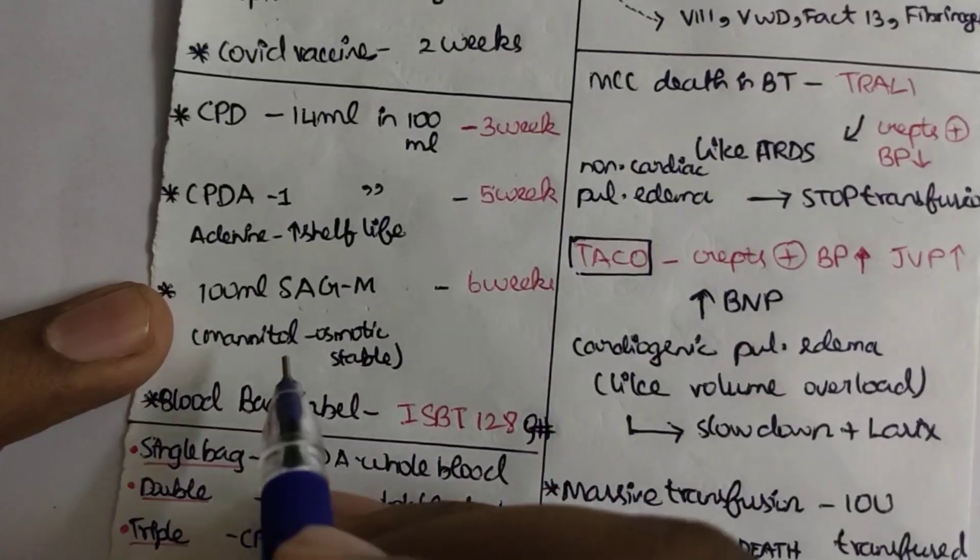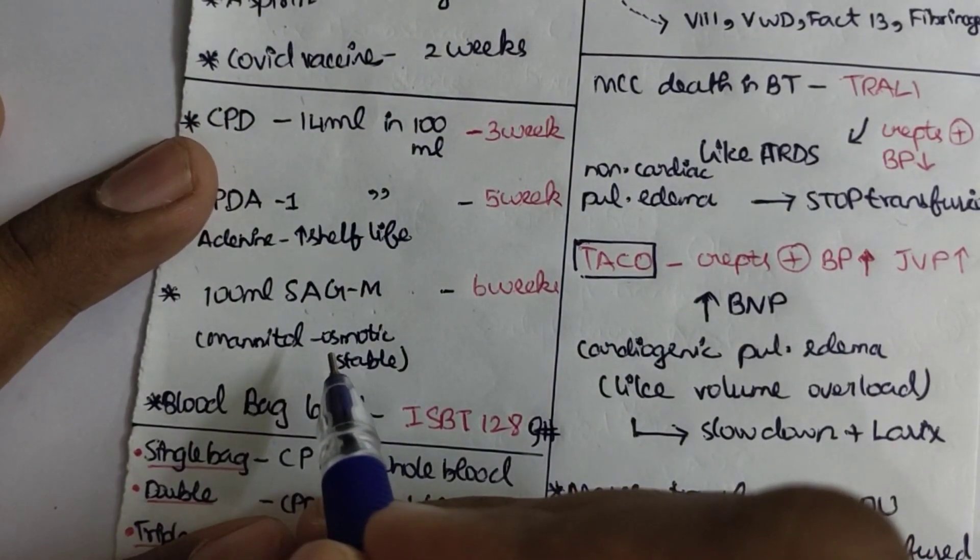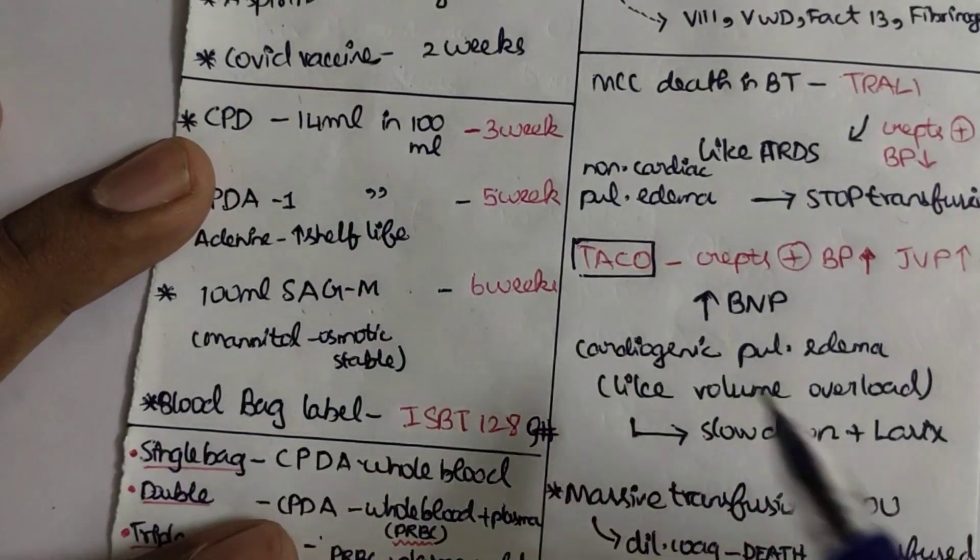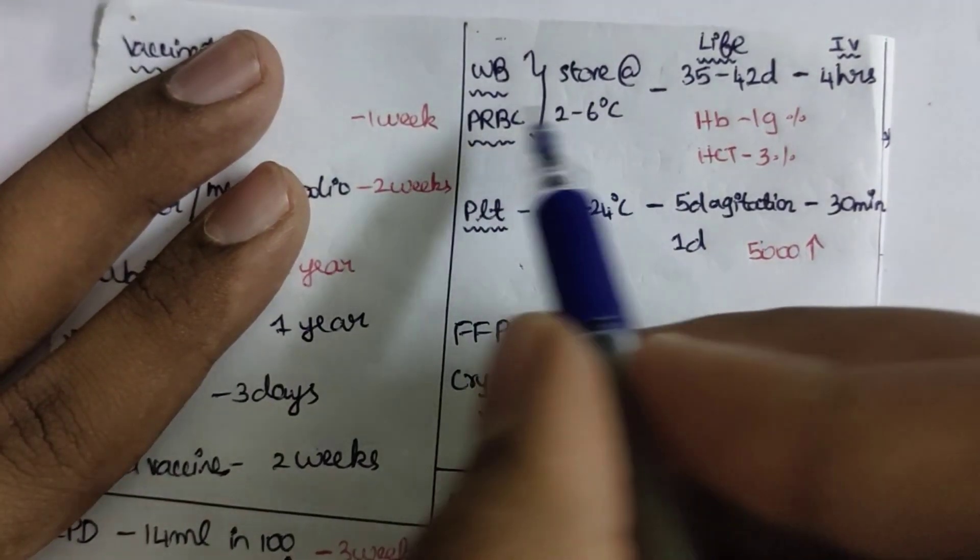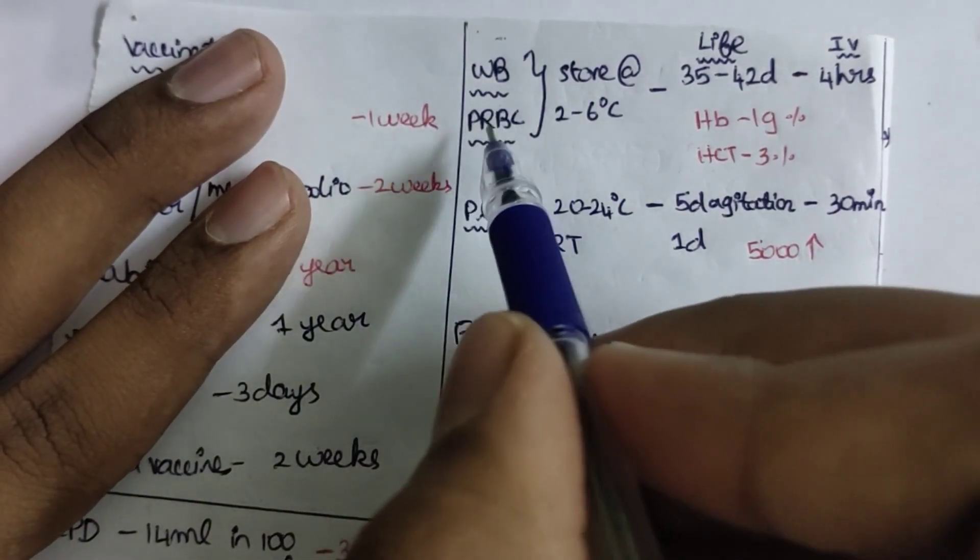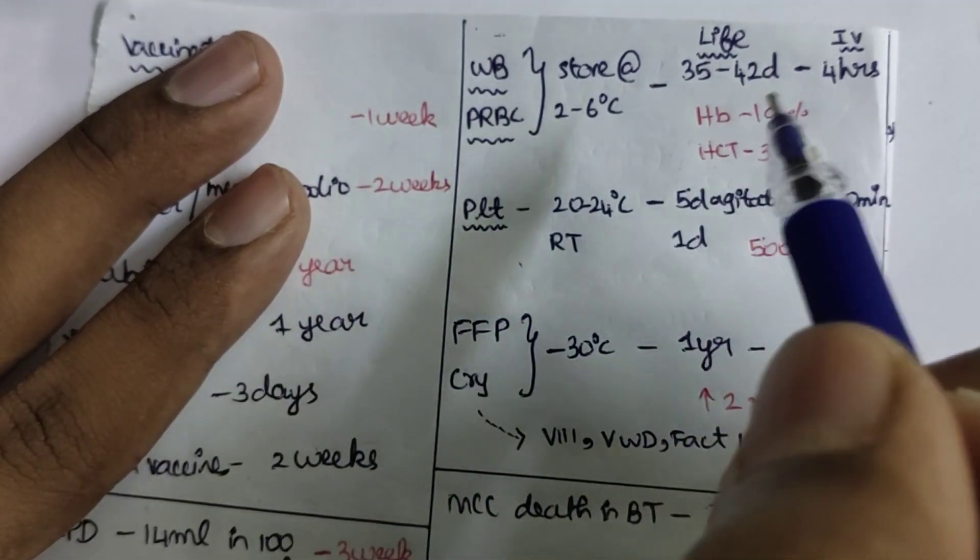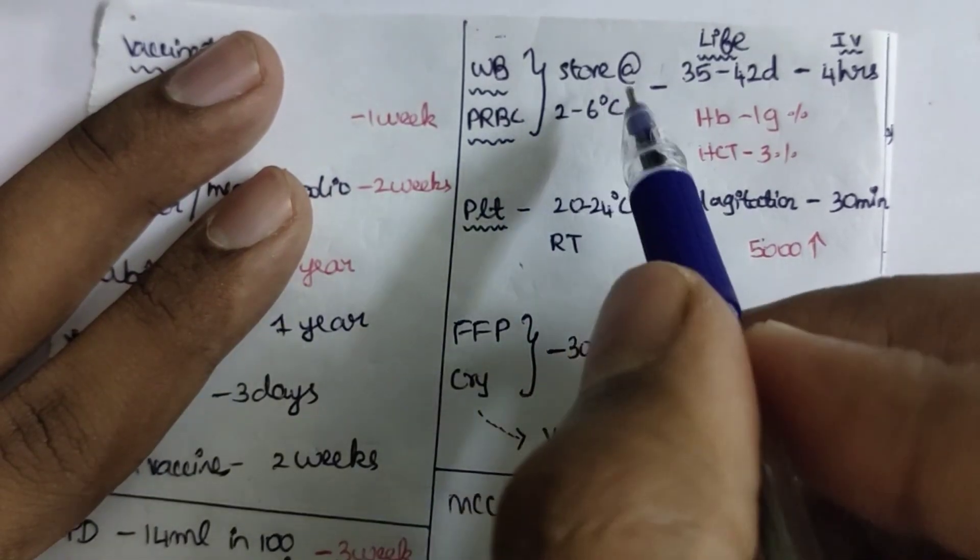The blood you are seeing in the blood bags has a label based on the International Society of Blood Transfusion 128. Whole blood and packed RBC has to be maintained for 35 to 42 days and stored at the temperature of 2 to 6 degrees Celsius.